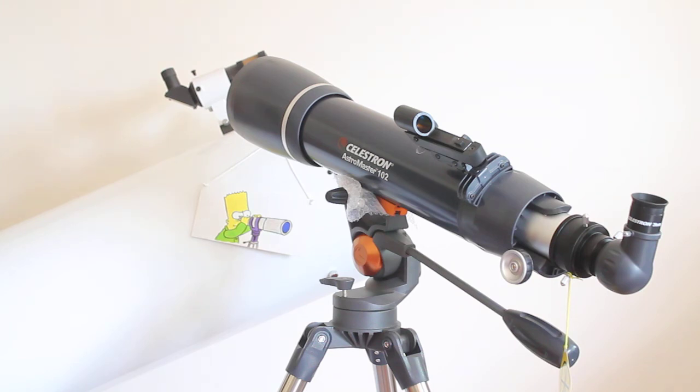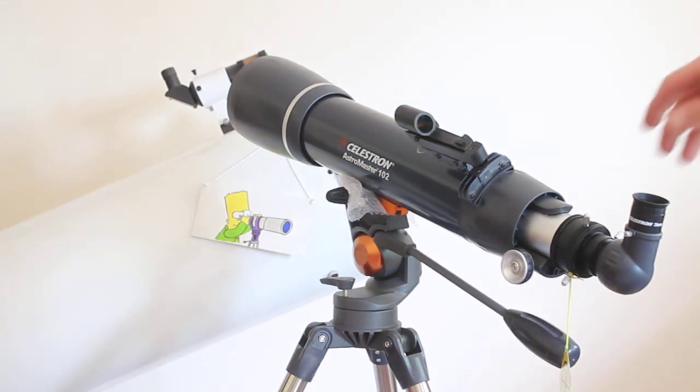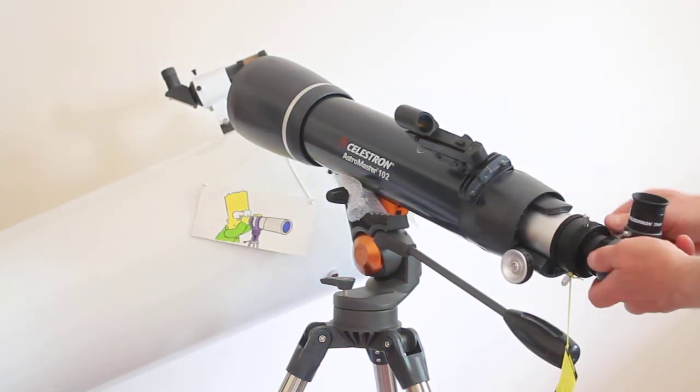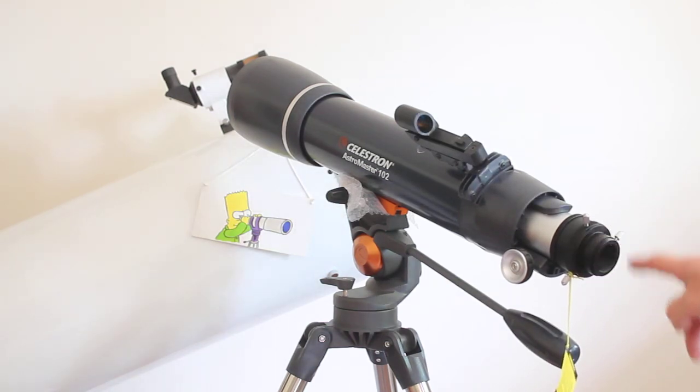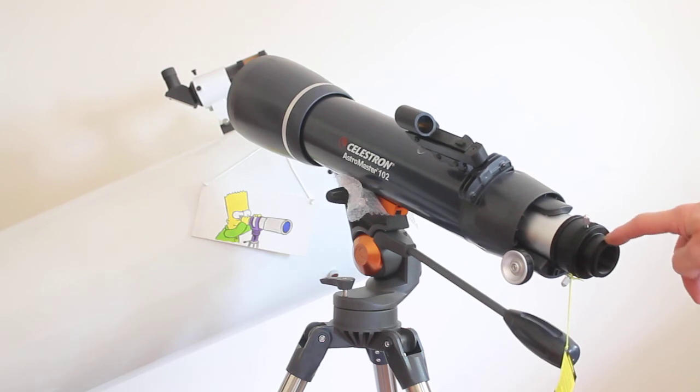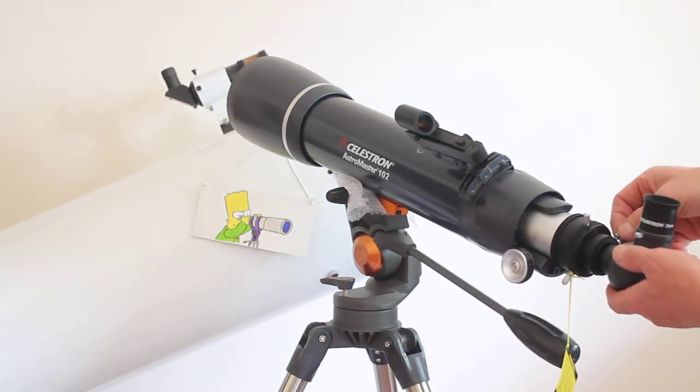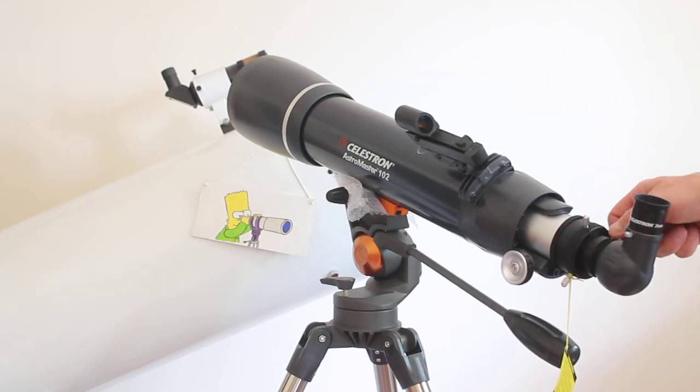Sticking a DSLR camera on—what you've got here is a T thread—so you can get a T adapter to go onto there, a T ring, sorry, click on your DSLR body, your SLR body, or even a mirrorless camera, and you're good to go for taking wide field photographs.